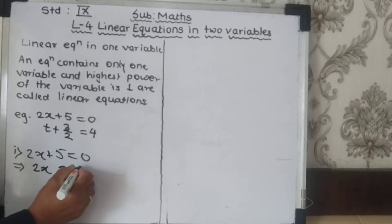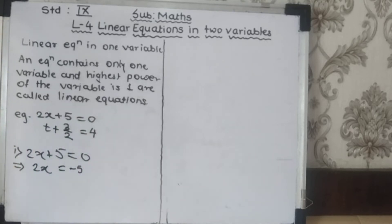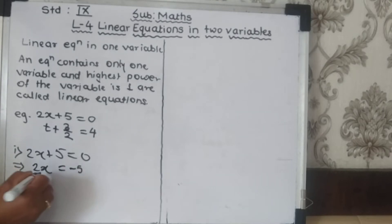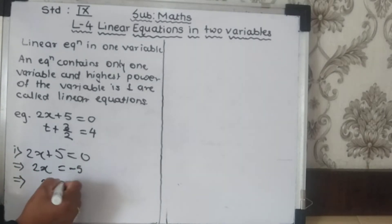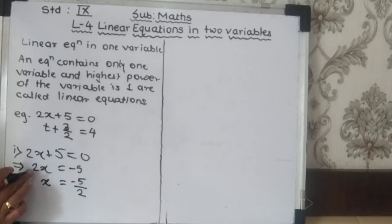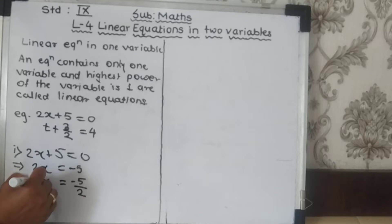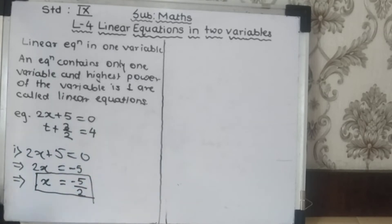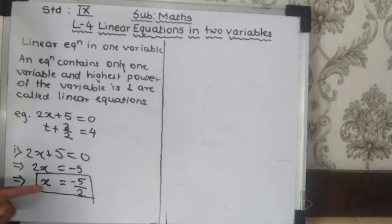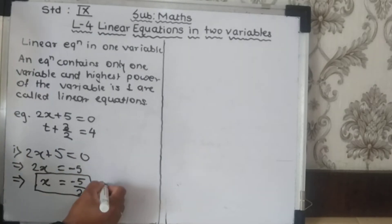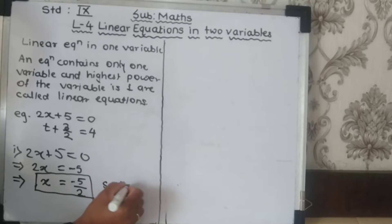I will use the transposing method to solve the equation 2x + 5 = 0. The +5 is transposed to the other side and becomes -5. So we get x = -5/2, because 2 is multiplied. This value we have got is called the solution of the equation.